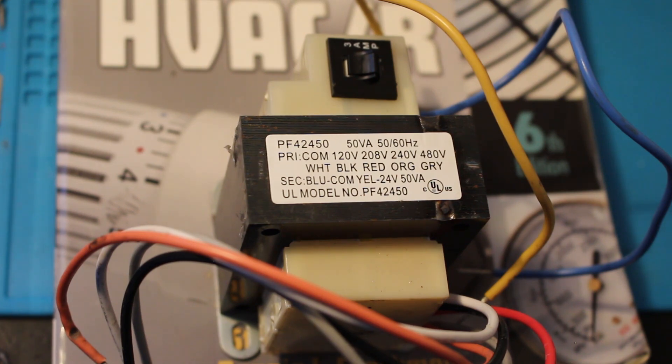Most transformers used in the air conditioning and refrigeration field are known as isolation transformers. This means the primary and secondary windings are magnetically coupled but electrically isolated. The most common transformer used in this field is a step-down control transformer.